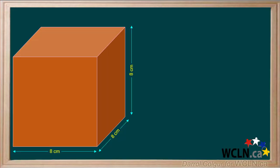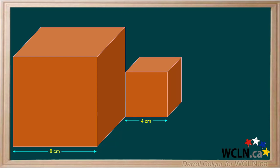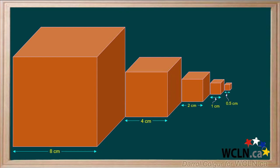We'll start with a cube that has a length of 8 cm. Now we'll add a second cube which has a length of 4 cm, a third cube with a length of 2 cm, a fourth cube with a length of 1 cm, and a fifth cube with a length of 0.5 cm. We'll keep on adding smaller cubes, dividing each length by 2 until our cube becomes infinitely small.